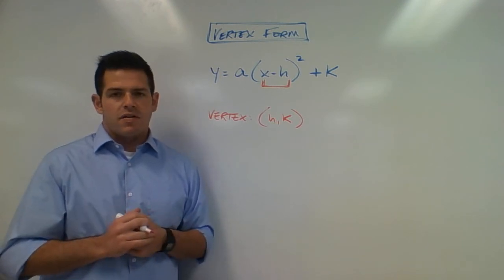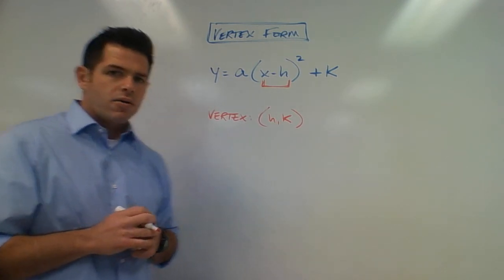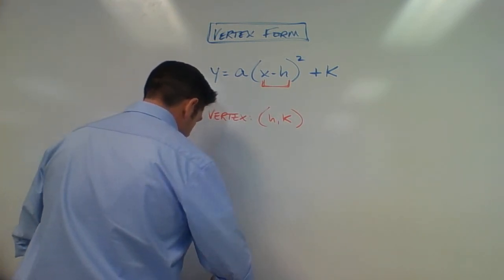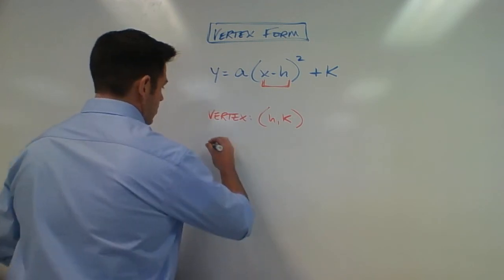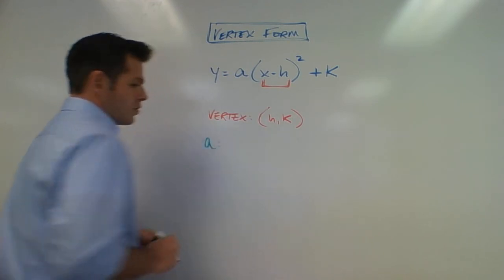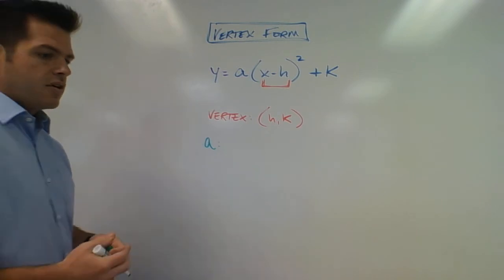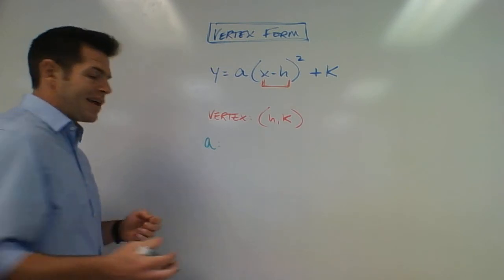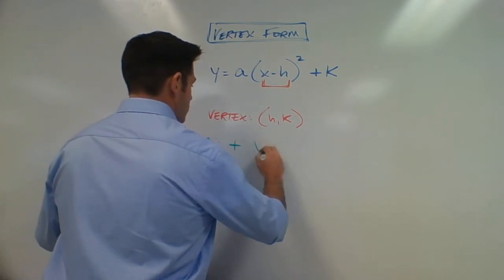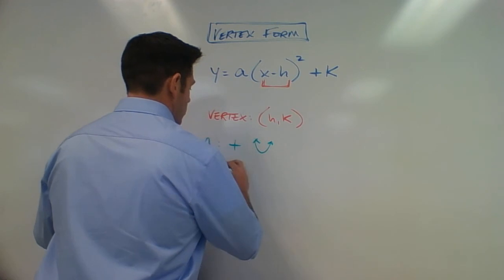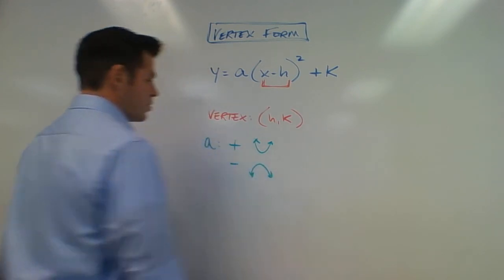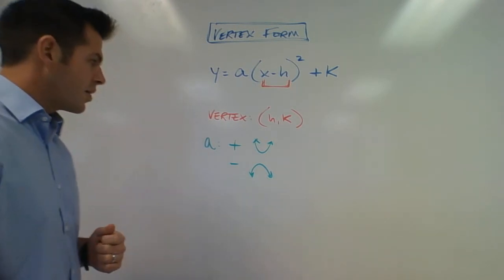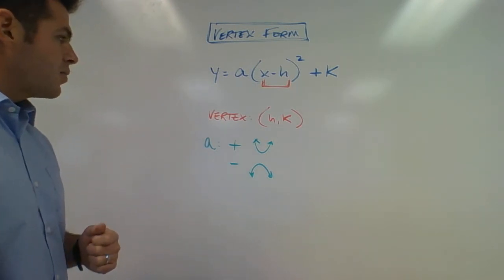Much like the absolute value function, our a value here holds a lot of power also. So just to kind of comment on that, we should know a couple different things. We know that if a is positive, we have our upwards parabola in this case, and if a is negative, we're going to have our downwards-pointing parabola. Almost kind of looks like a smiley face there, or a frowny face if it's negative, if you want to think about it that way. So that will definitely help us out.